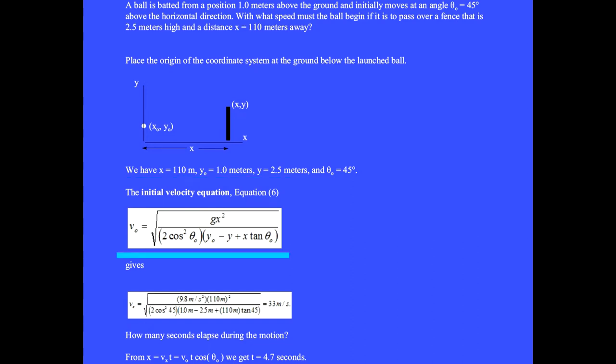Equation 6 gives v₀ equals 33 meters per second. How many seconds elapsed during the motion? From the x-motion, we get t equals 4.7 seconds.